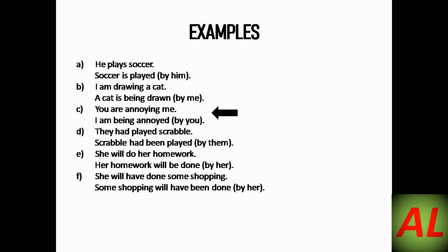In another continuous example, 'being' is added in passive voice with 'annoyed by,' and 'you' remains 'you' in passive voice while 'me' comes to the start of the sentence. In the next example with 'had': 'They had played scrabble' → 'Scrabble had been played by them.' 'Had' has been changed into 'had been' as per the rule, and all other rules are followed as well.